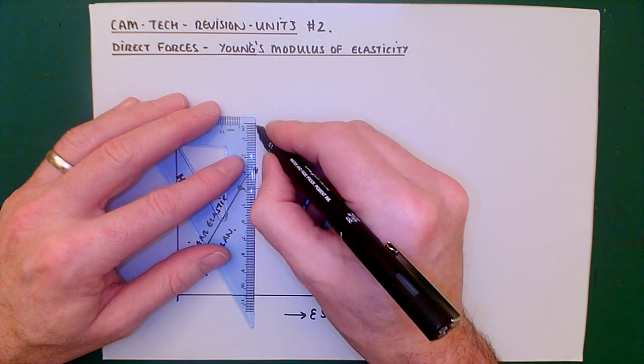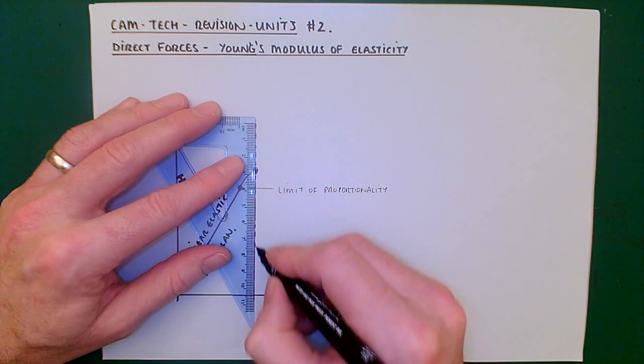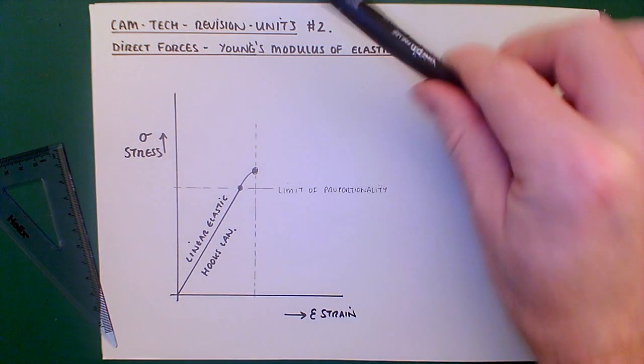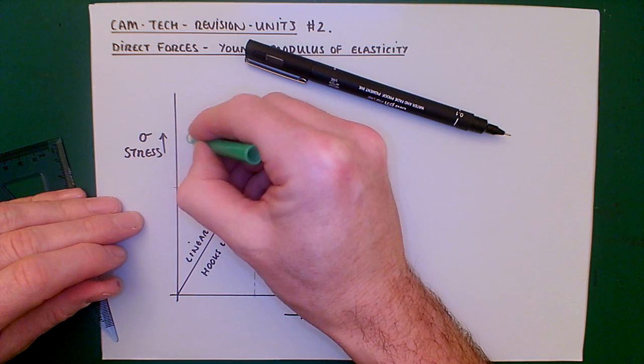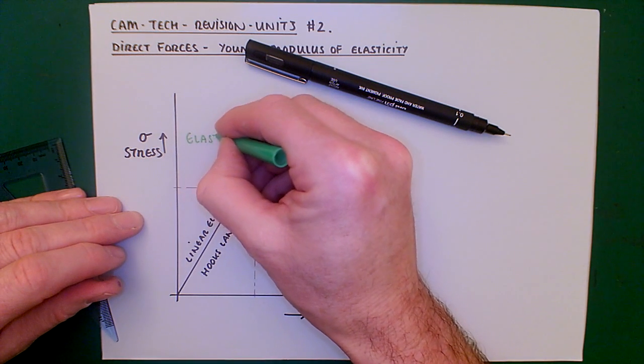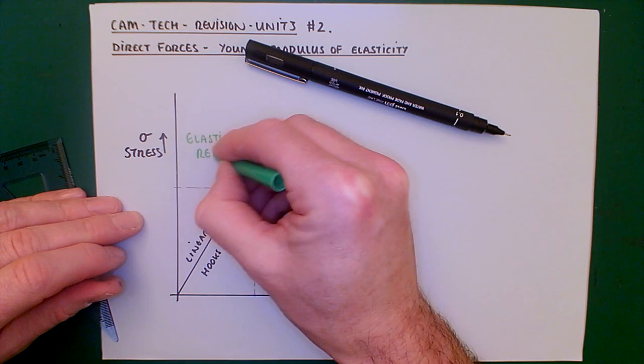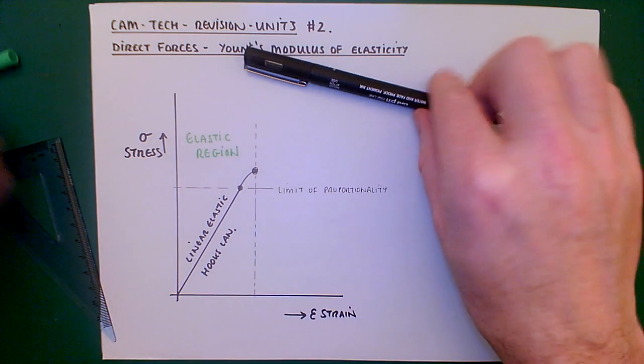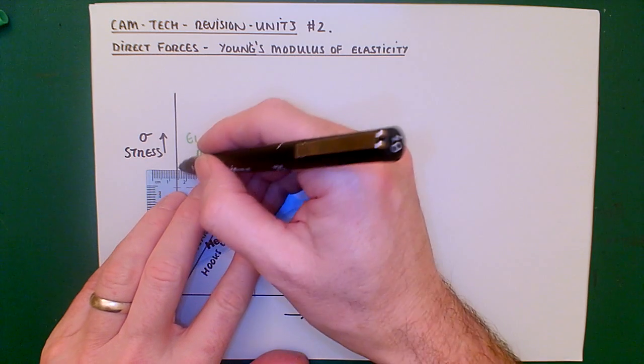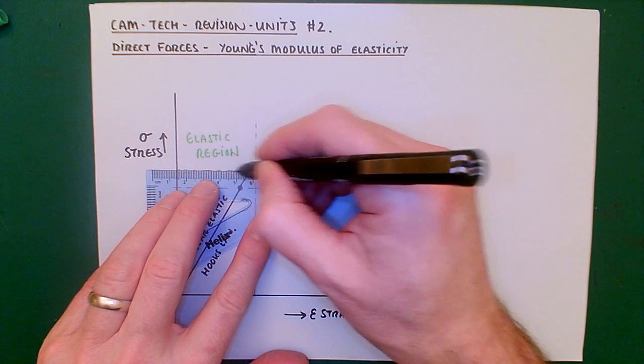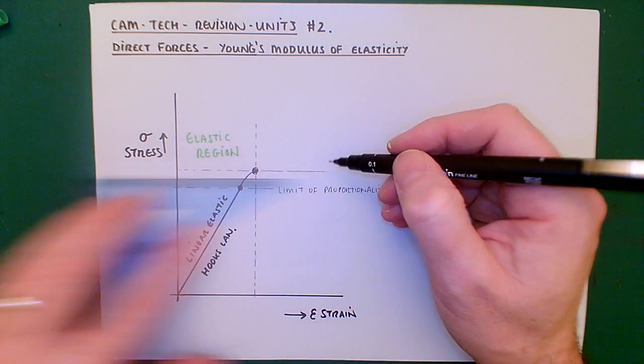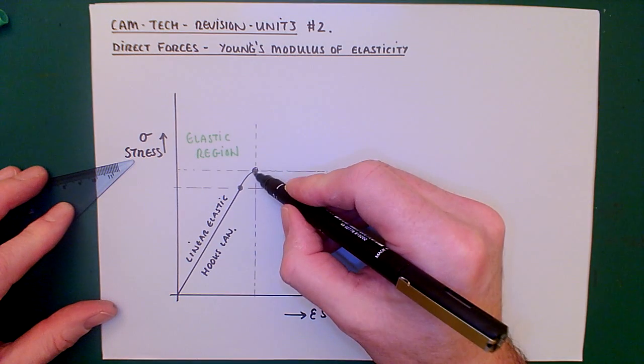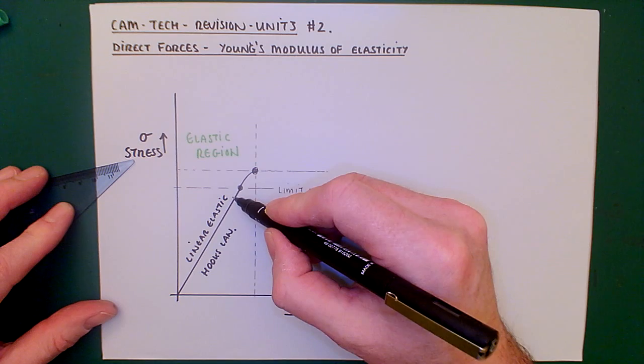At that point there, we're here. We're in the elastic region. So up to this point of stress, if you will, and that amount of strain from that stress. And if you release that, it's elastic. It would go back to its original.